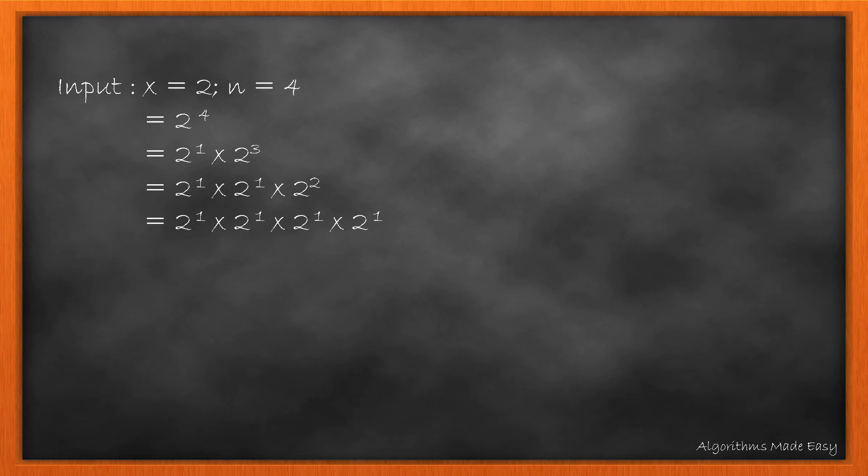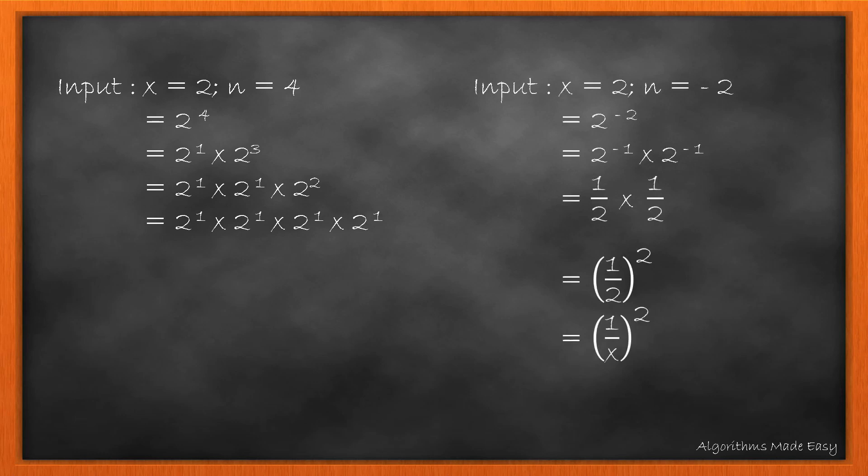Before looking at any of these approaches, let's see what the power function does. If x is 2 and n is 4, it means we need to find the value for 2 raised to 4, which can be broken as 2 raised to 1 multiplied by 2 raised to 3, and so on. We can see that while we multiply x by x, the power gets added. Now for negative numbers: 2 raised to minus 2 can be broken into 2 raised to minus 1 multiplied by 2 raised to minus 1, where 2 raised to minus 1 can be written as 1 by 2. So 2 raised to minus 2 equals 1 by x raised to minus n. We will use this to convert negative powers to positive.